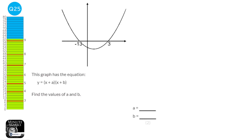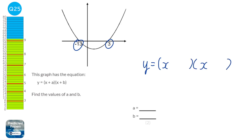If the roots are −13 and 3, and the quadratic can be written in factored form (x plus a)(x plus b), then the signs inside the brackets are opposite to the roots. So a equals 13 and b equals −3.